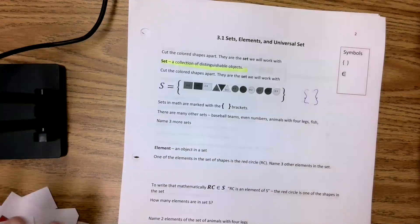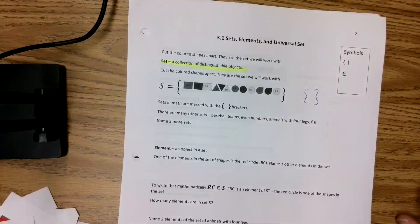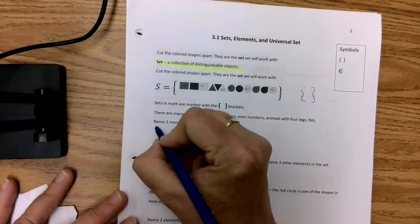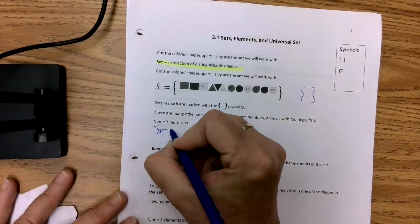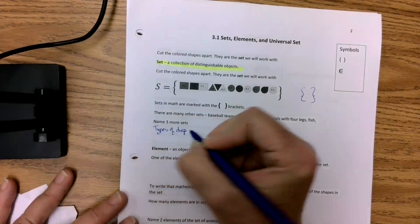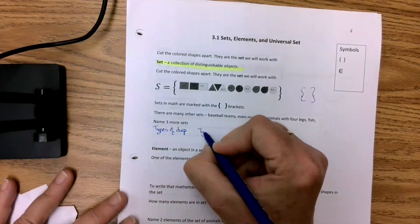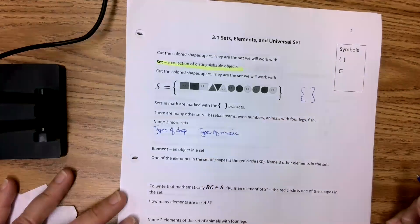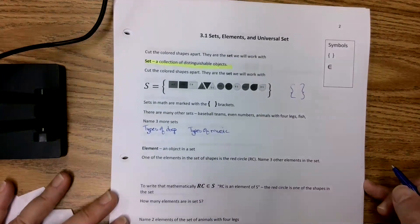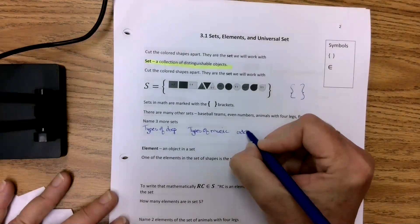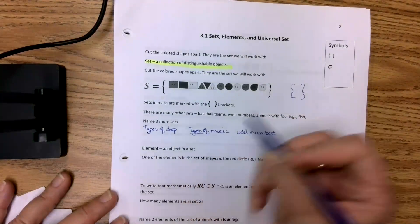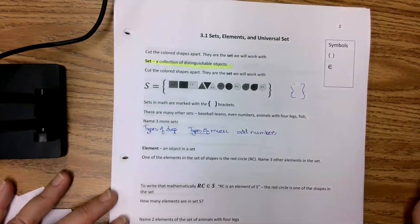So set notation brackets and there's all kinds of other sets. You could talk about baseball teams and even numbers and frogs and types of chickens. Different First Nations in Saskatchewan, students in different classes. Whatever you want. So how about types of dogs, favorite types of music. These are not the only answers. Odd numbers.